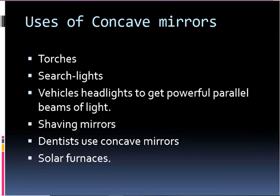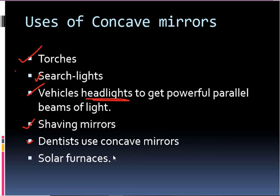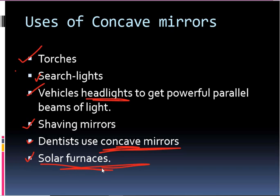The uses of a concave mirror include torches, search lights, vehicle headlights such as bikes and scooters, shaving mirrors, dentist mirrors — dentists use concave mirrors to examine teeth — and solar furnaces, which are used for cooking purposes. These are some of the important uses of concave mirrors.